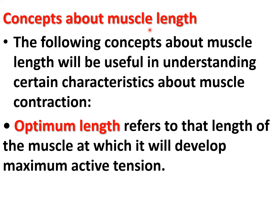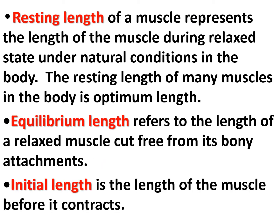The following concepts about muscle length are useful in understanding certain characteristics of muscle contraction. Optimum length refers to the length of the muscle at which it will develop maximum active tension. Resting length represents the length of the muscle during the relaxed state under natural conditions in the body, and the resting length of many muscles is at optimum length. Equilibrium length refers to the length of a relaxed muscle cut free from its bony attachments. Initial length is the length of the muscle before it contracts.